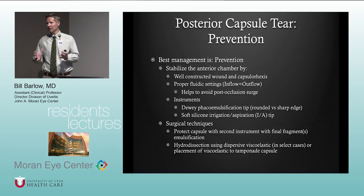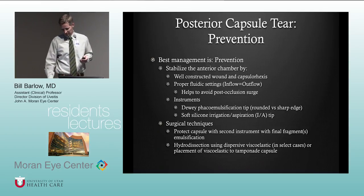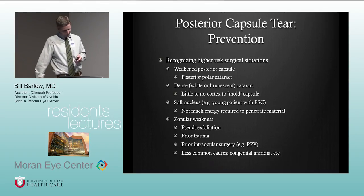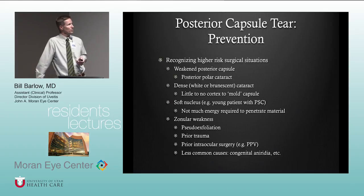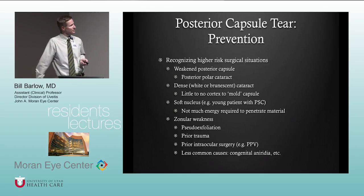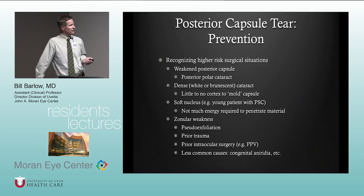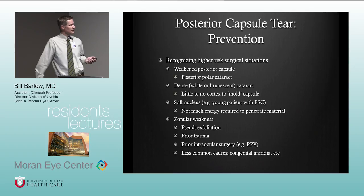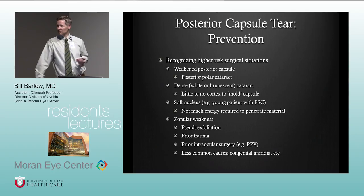We should also recognize when we are at higher risk. A weakened posterior capsule, such as in a posterior polar cataract, or a dense cataract with little or no cortex to mold the capsule — in those cases we might use a dispersive viscoelastic. A soft nucleus, such as in a young patient with a posterior capsular cataract, requires very little energy to penetrate through the material. You might use a technique called a Brown maneuver, popping the lens out of the capsular bag at least partially, or a flip-and-chip maneuver.